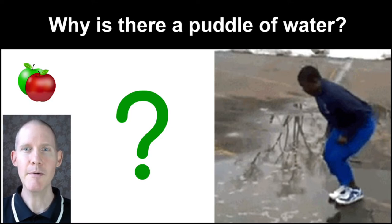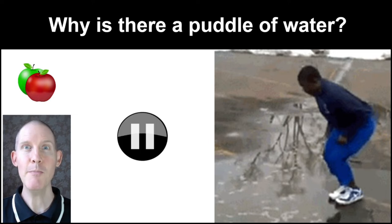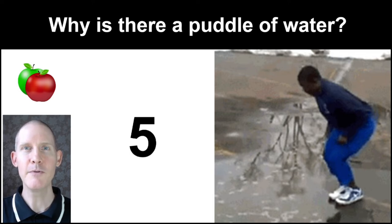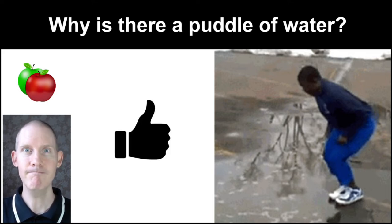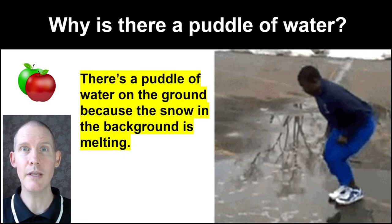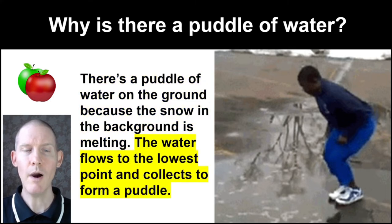Let's move on to the next question: Why is there a puddle of water? Take a moment, pause the video, answer the question on your own. I'll give you my answer in five, four, three, two, one. There's a puddle of water on the ground because the snow in the background is melting. The water flows to the lowest point and collects to form a puddle.